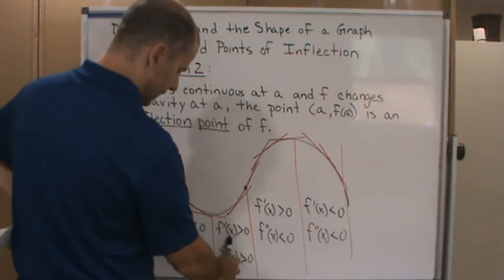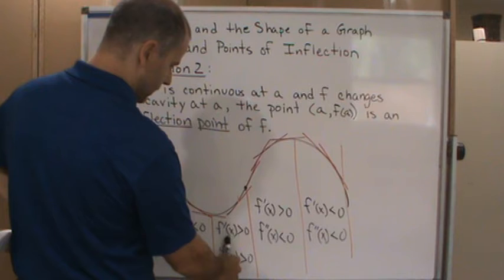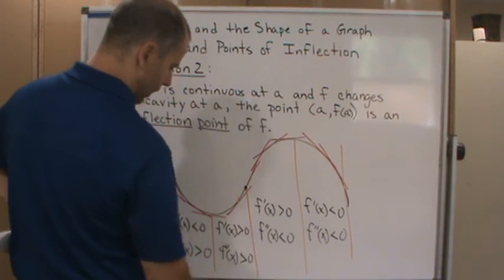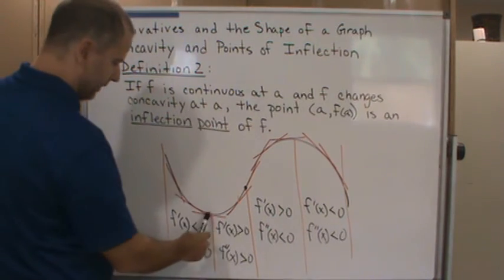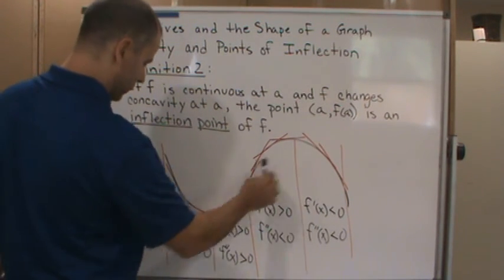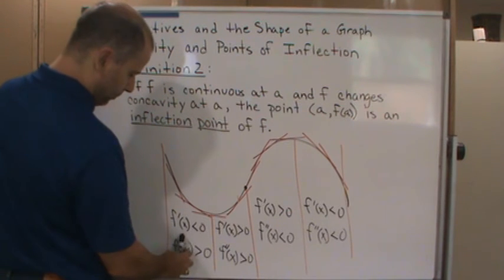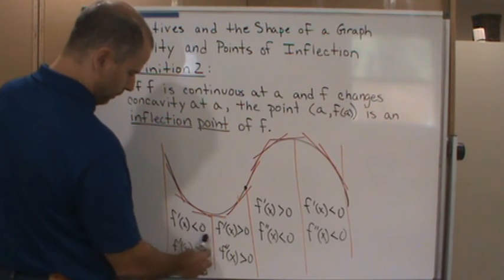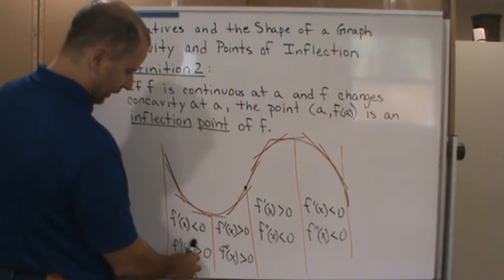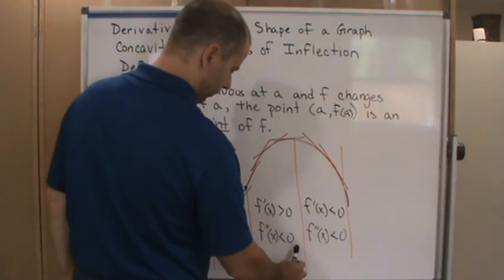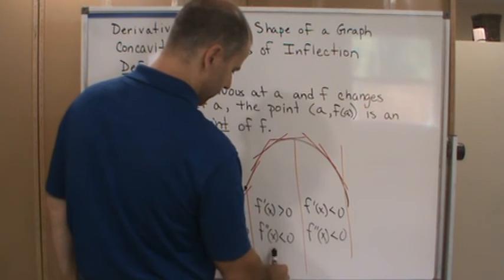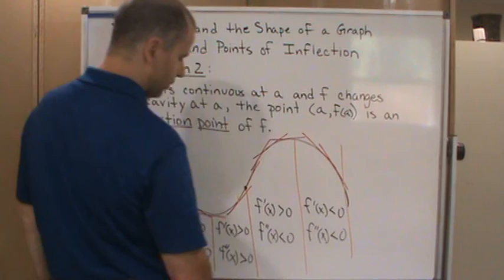And notice that in this case here, this first derivative is positive on both sides, so that doesn't really help us. But notice here at the minimum value and the maximum here, notice how when you have a minimum value the concavity doesn't change, but the first derivative does change. And over here the first derivative changes at the maximum, but the concavity doesn't change.